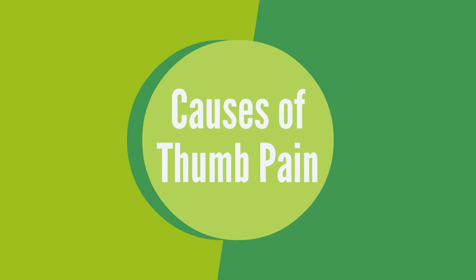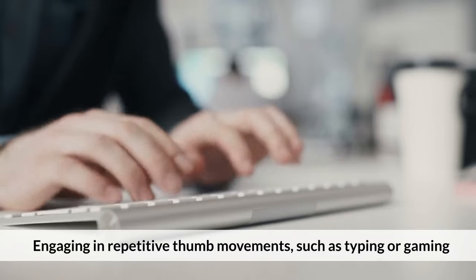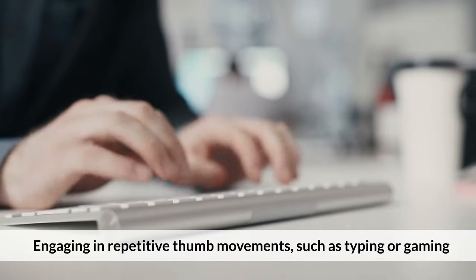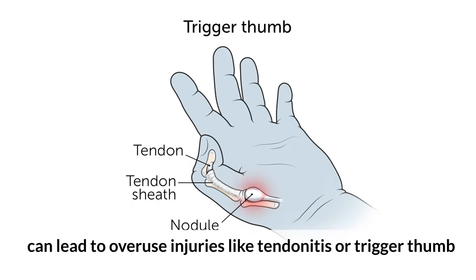Causes of Thumb Pain. 1. Overuse or Repetitive Strain. Engaging in repetitive thumb movements, such as typing or gaming, can lead to overuse injuries like tendonitis or trigger thumb.